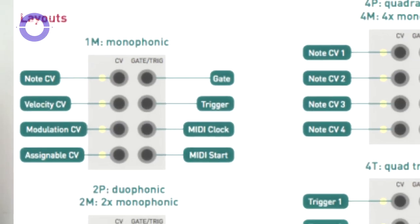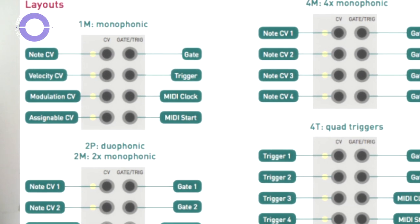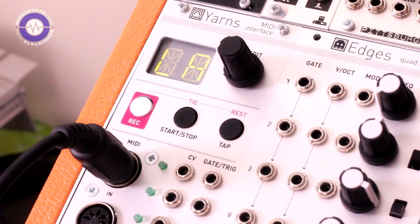We have four different configurations of the CV and gate outputs, and nine different layouts which interpret the incoming MIDI data and output it differently depending on which layout you're on. Yarns also has a built-in digital oscillator, a 64-step SH101 style sequencer complete with 303 style slides, an arpeggiator, a Euclidean sequencer, portamento, vibrato, different tuning systems, and just loads and loads of features.